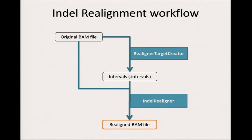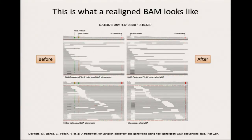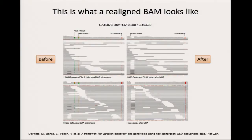You end up with a realigned BAM file with the same reads as the input. Most alignments, especially those not among the realignment targets, will look the same. But for regions that were part of the targets, some reads will have been realigned. For example, this is from real data in chromosome one from the Thousand Genomes pilot project, shown before and after realignment using HiSeq data from a genome analyzer.